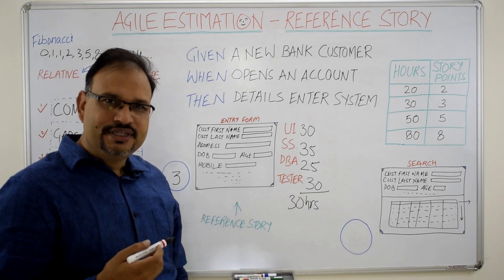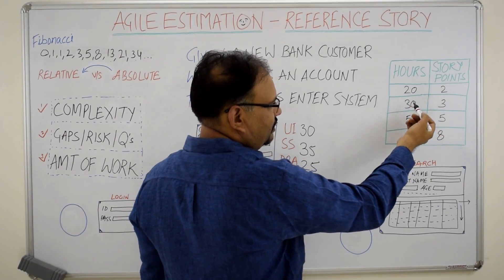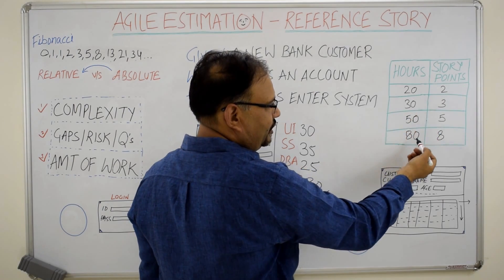Now the close enough estimate which can be agreed by the team is 30 hours. Next I am going to do is draw this table which has hours mapped to the story points, 20 hours to 2 story points, 30 to 3, 50 to 5, 80 to 8.